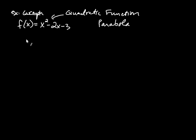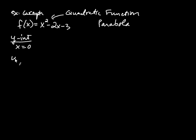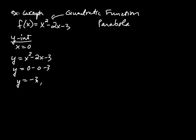When we go to graph parabolas, we first look for intercepts. The simplest intercept to find is the y-intercept. Any time you're looking for a y-intercept, you let x equal zero and solve the resulting equation. So for y = x² - 2x - 3, plugging in zero gives y = 0 - 0 - 3, so y = -3. That is the y-intercept — the parabola crosses the y-axis at -3.